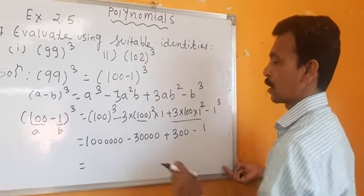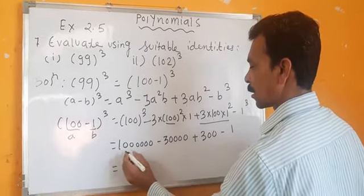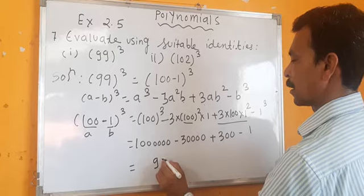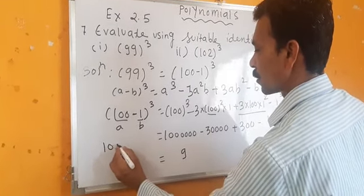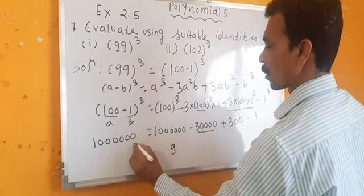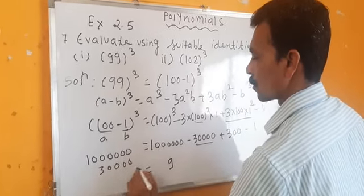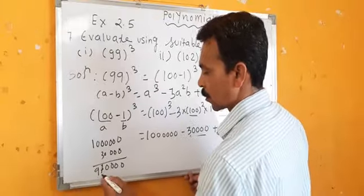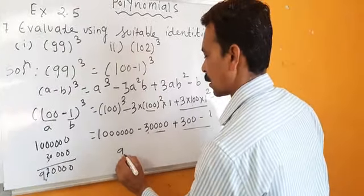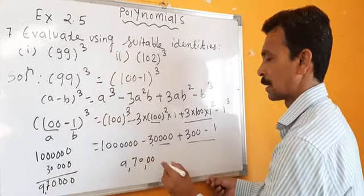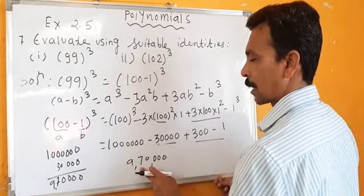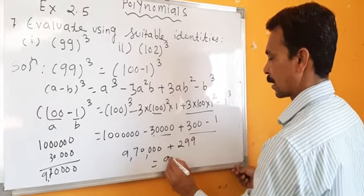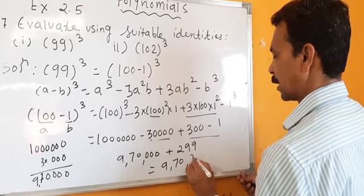Now we have to subtract. We get 1,000,000 minus 30,000 is 970,000. Then 300 minus 1 is 299. So the answer is 970,299.